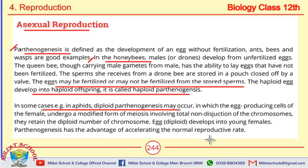In diploid parthenogenesis, the egg-producing cells of the female undergo a modified form of meiosis involving total non-disjunction of chromosomes. As a result, they retain the diploid number of chromosomes. So in this case, the eggs retain the full diploid chromosome number.